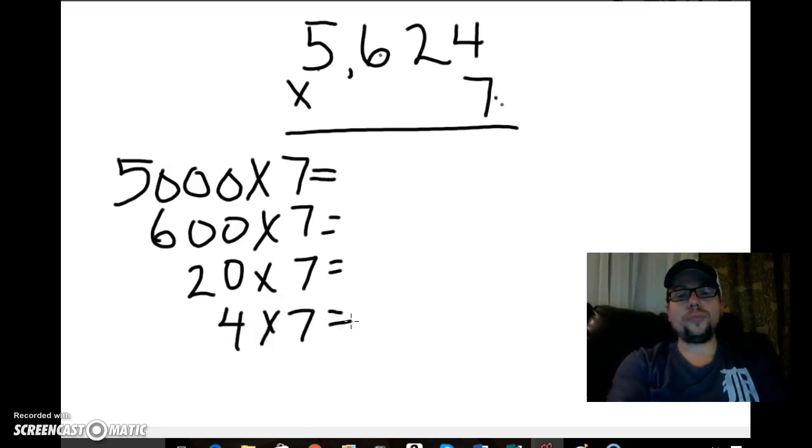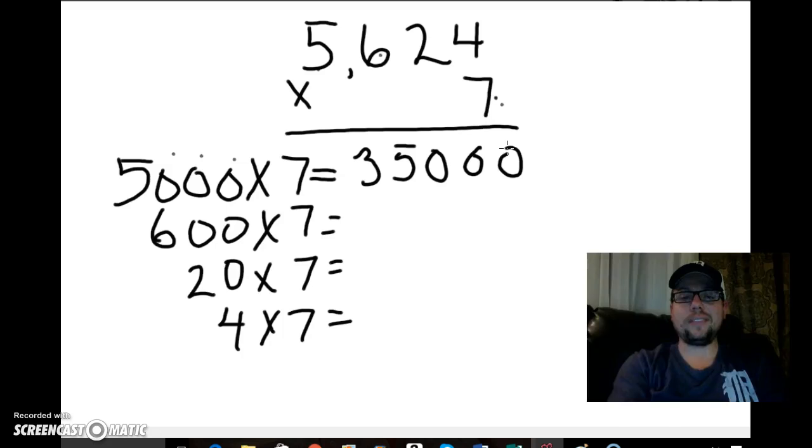Now if I solve for these, I'll be able to add them together and get my solution. So I'm going to think 7 times 5, that's 35. Now I'm not multiplying by 5 though, I'm multiplying by 5,000. So I need to bring these 3 zeros across because 7 times 5,000 is 35,000.